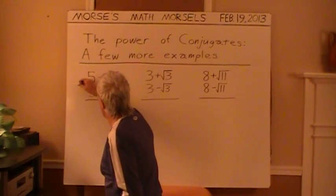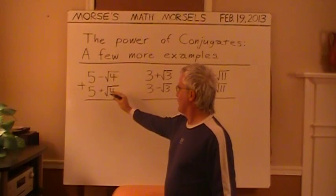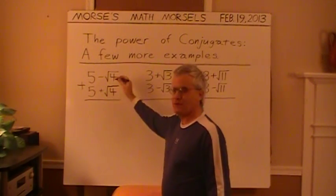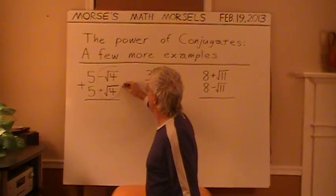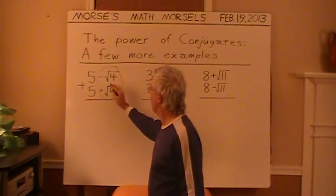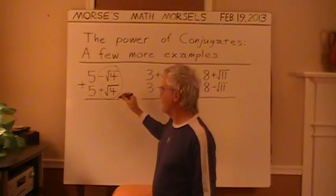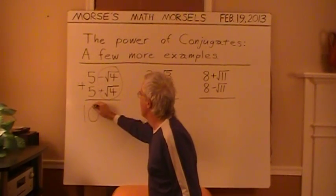For example, 5 minus the square root of 4 plus 5 plus the square root of 4. Notice when you add conjugates, these second terms on the right side will cancel. That's just 0. Negative the square root of 4 plus the square root of 4 just makes 0, so we're just left with 5 plus 5, which is 10.